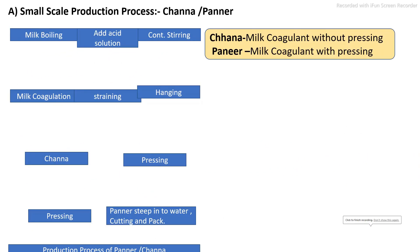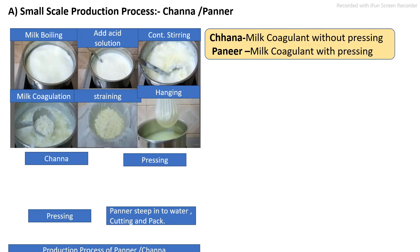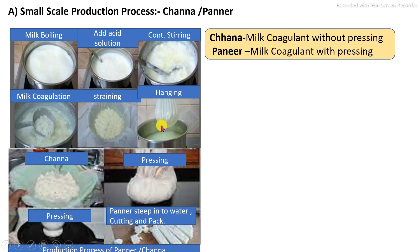You can see in this picture the production process of paneer at small or home scale: first milk boiling, then addition of the acid solution, then continuous stirring and coagulation of milk proteins, then the coagulated milk is separated by straining, then the hanging process. After hanging, you finally get the chana. This chana is used for paneer production — pressed properly for at least 10 to 15 minutes. The pressed chana is called paneer, then cut as per the required size, packed, and stored under refrigeration.